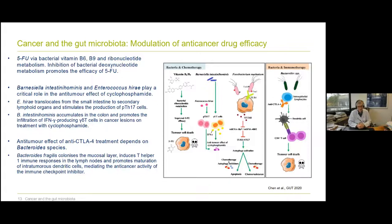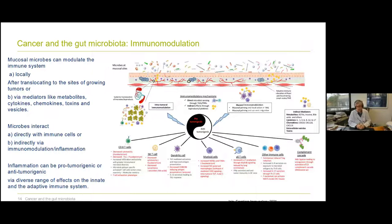Mucosal microbes can have a major impact on the immune system — either locally, by translocating to the sites of growing tumors, or via mediators like metabolites, cytokines, chemokines, toxins, and even bacterial-released vesicles. Microbes can interact directly with immune cells or indirectly via immune modulation and inflammation. The inflammation caused by microbiota can be either pro-tumorigenic or can actually inhibit the tumor. They have a very diverse range of effects on the innate and adaptive immune system — as a matter of fact, microbes work on anything and everything in the human body.